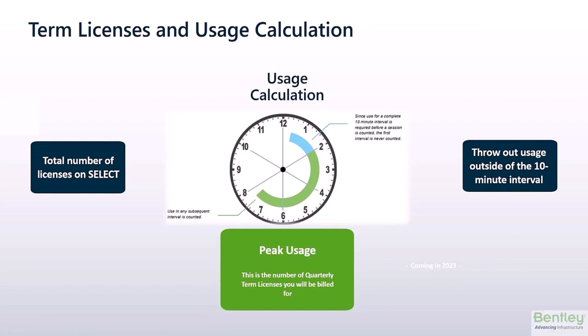How do we calculate open access usage? Usage is determined by counting the total number of unique machines that access an application during each 10-minute interval throughout the day. The highest number of machines accessing an application during any one 10-minute interval during the quarter is the peak usage. If this peak usage surpasses the number of licenses on Select maintenance, then you will be billed for the difference.